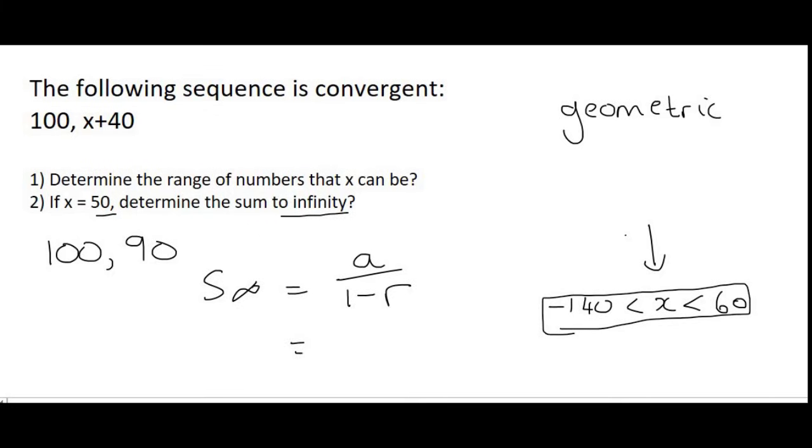And so a is just going to be term 1 which is 100 over 1 minus, now r is your ratio. So the ratio here is going to be 90 over 100 which is 0 comma 9. And that's going to give us 1000.